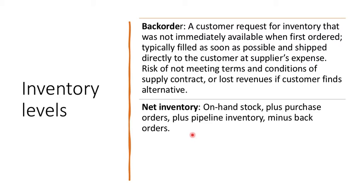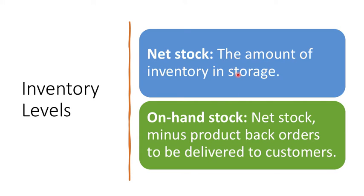Next is net inventory. Net inventory is the inventory that you have on hand, plus purchase orders, plus pipeline inventory, minus backorders. Net inventory is going to include what you have on hand, what you are going to receive, and what is in the pipeline, minus all the backorders.